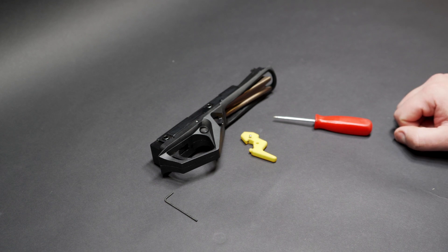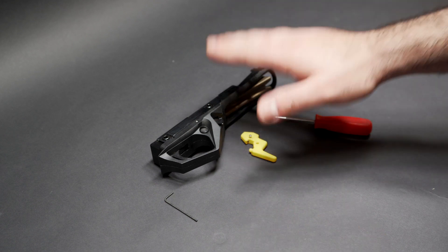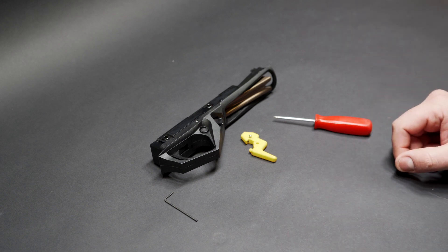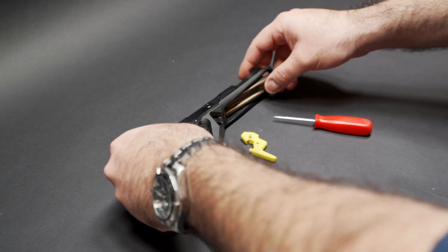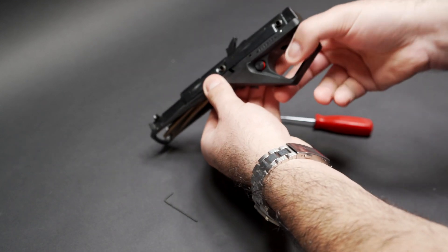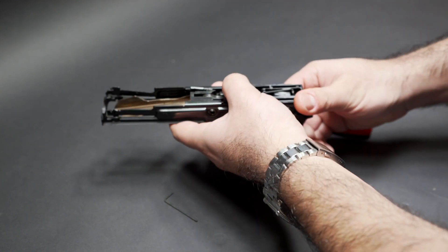So first thing to do is make sure your gun is clear and remove the trigger group. If you can't get this far by yourself, you should probably have this installed by a professional. If your trigger has come out of the gun cocked, then the first thing you'll need to do is remove the safety and decock the hammer like so.